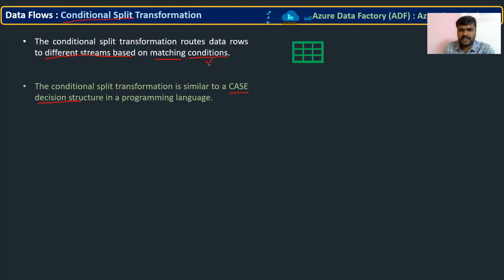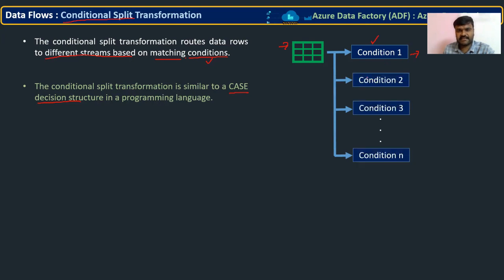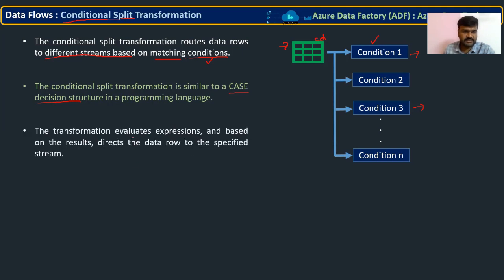Here is an overview: we have a dataset, and we apply conditions on it. For whichever row a condition is satisfied, that row is routed to the corresponding stream. The transformation evaluates expressions and, based on the result, directs the data row to a specified stream.